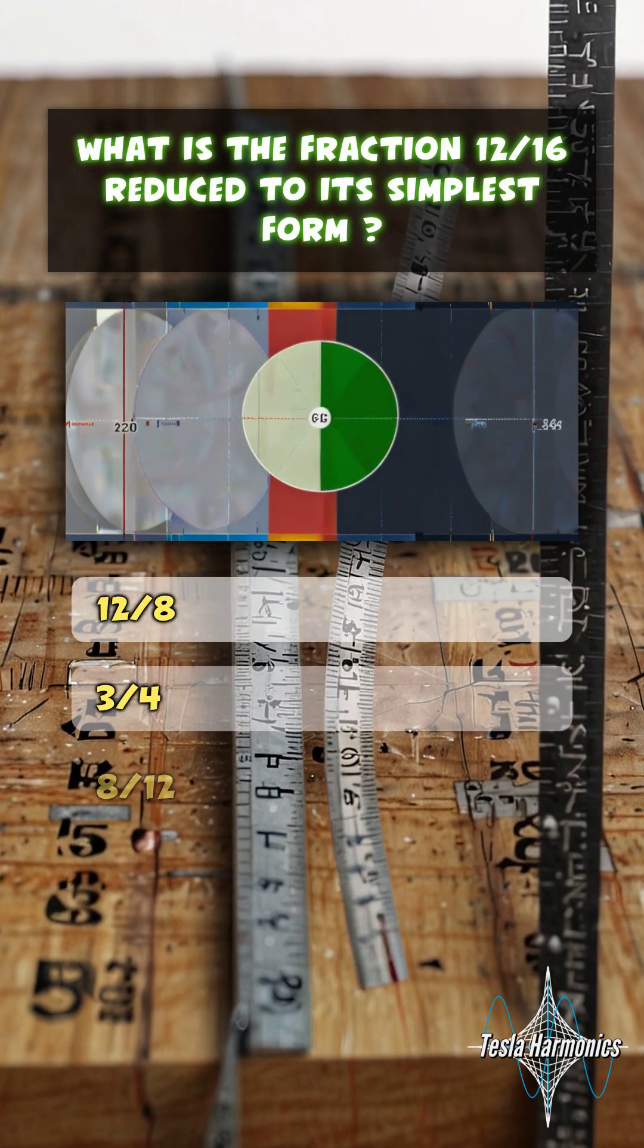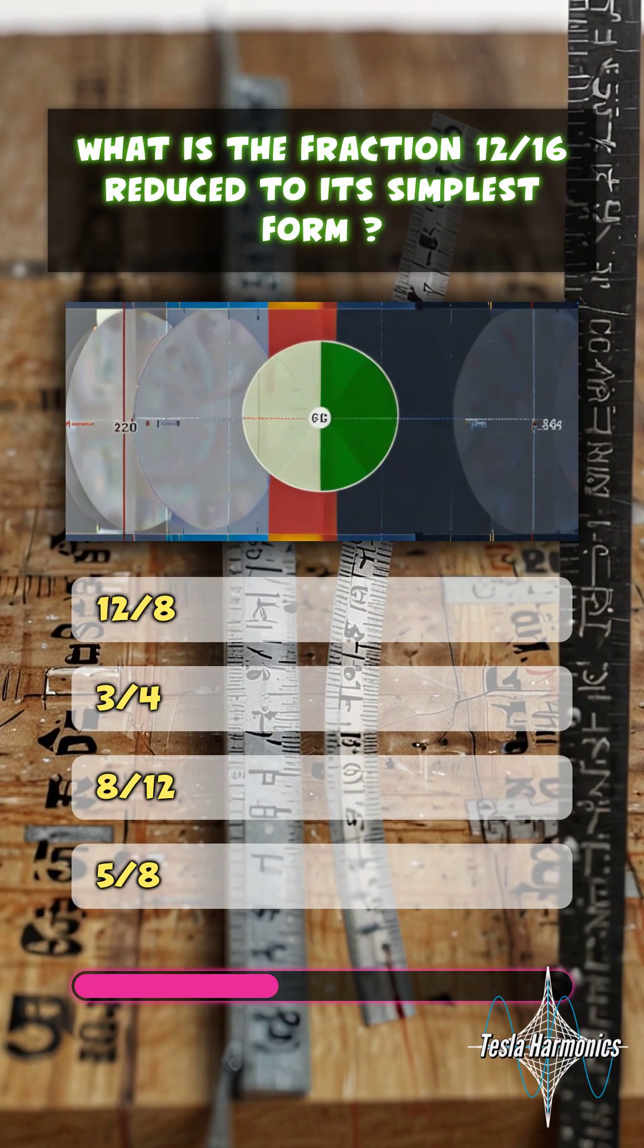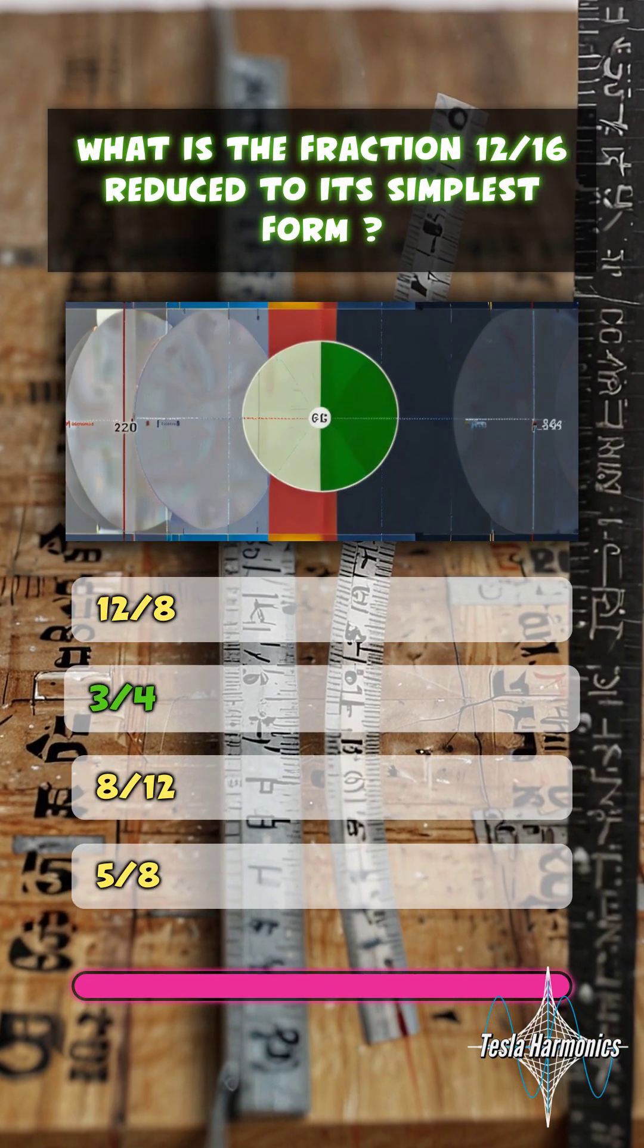What is the fraction 12 sixteenths reduced to its simplest form? 3 quarters.